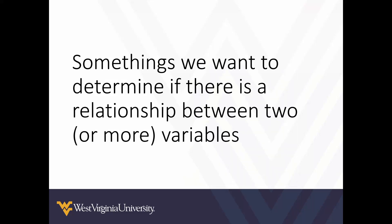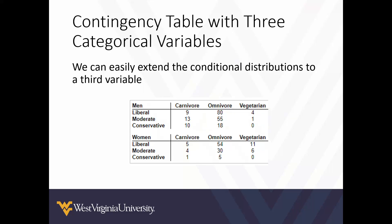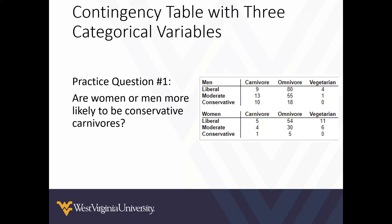Sometimes we want to determine if there is a relationship between two or even more variables. When there are more than two variables, we can extend our contingency tables for a third variable. For example, this contingency table includes people's political preferences, their diet — carnivore, omnivore, or vegetarian — and biological sex: male and female.